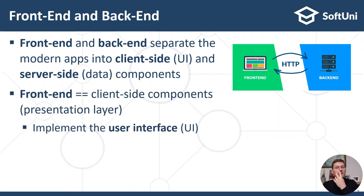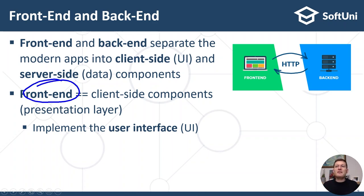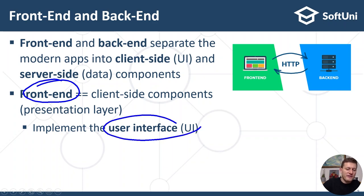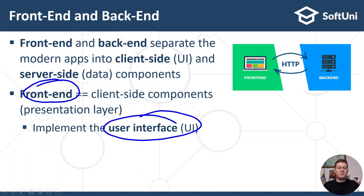The front-end consists of the client-side app components on the presentation layer in the three-tiered architecture. It displays the presentation to the user — the user interface is what users see on their screens. This includes text, images, video fields, forms, lists, icons, buttons, sliders, toolbars, menus, and other UI elements.